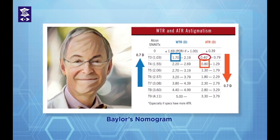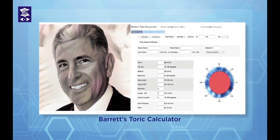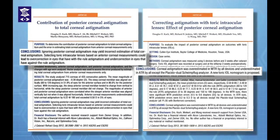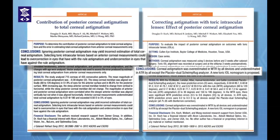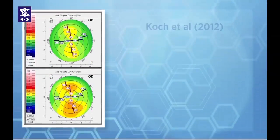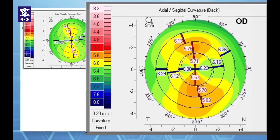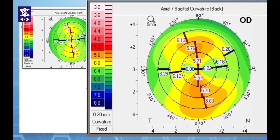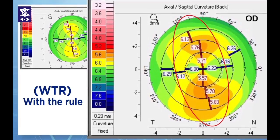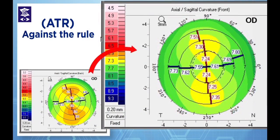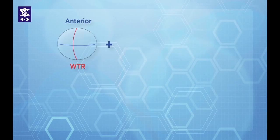The introduction of the Bales nomogram and recently the Barrett toric calculator were significant developments, as they were shown to improve the predictability of toric IOLs after due consideration of posterior corneal astigmatism. Koch et al. recently showed that in the majority of the population, the steep meridian on the posterior surface of the cornea is oriented vertically — that is, with the rule.